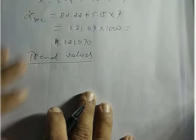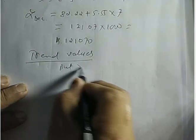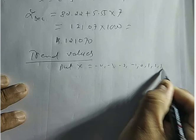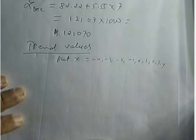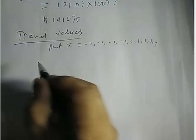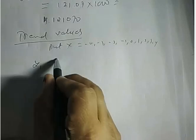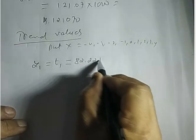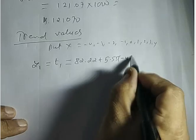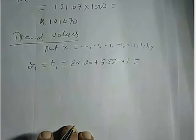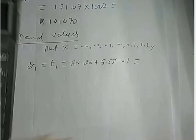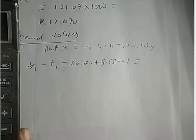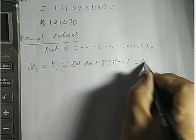We put x equal to minus 4, minus 3, minus 2, minus 1, 0, 1, 2, 3, 4 for trend values. Taking the equation 82.22 plus 5.55, then minus 4 gives t1 equals 82.22 minus 22.20 equals 60.02.